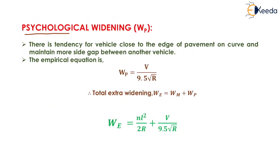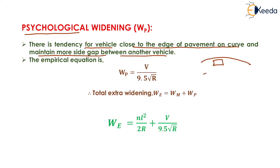Psychological widening is defined as the tendency for a vehicle to move close to the edge of the pavement on a curve and maintain more side gap between another vehicle. It is provided when the vehicle tries to move very close to the edge of the pavement, and this vehicle has to maintain some side gap between other vehicles. If the vehicle moves as close as possible to the outer edge, there is a chance of overturning. The empirical equation is WP = V / (9.5√R), where R is the radius of the curve in meters and V is the velocity in kilometers per hour.